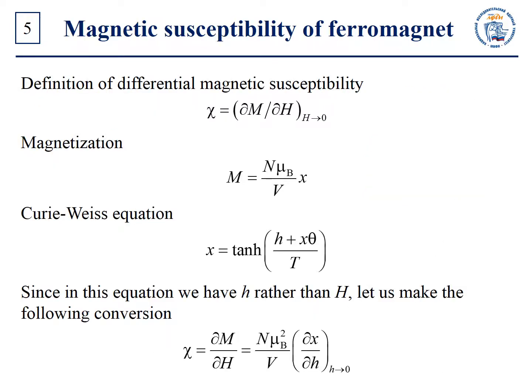Now let us speak about magnetic susceptibility. First of all, recall its definition. In the paramagnetic state, the magnetization is equal to zero at zero magnetic field, and magnetization is nonzero only at non-zero field. In this case, conventional magnetic susceptibility coincides with the differential one. Earlier we showed that at T much greater than Curie temperature, magnetic susceptibility could be described by the Curie-Weiss law. Let us find the expression for differential magnetic susceptibility in the full temperature range from zero to infinity. We must obtain the M(H) dependence and differentiate it with respect to H. We already know the expression for magnetization.